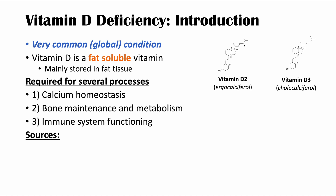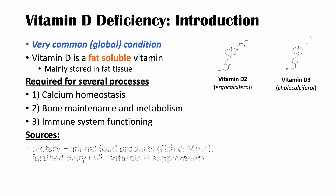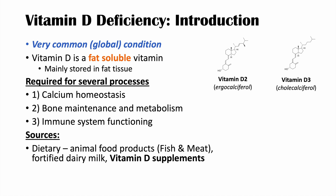Where do we actually get vitamin D? We can get vitamin D from our diets. Animal food products like fish and meat do contain some vitamin D. Fortified dairy milk — dairy milk that's had vitamin D added to it — is also a source, as are vitamin D supplements, like taking an over-the-counter vitamin D pill.